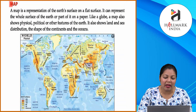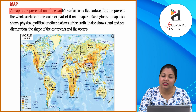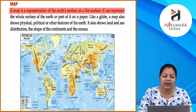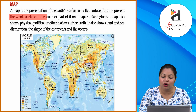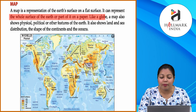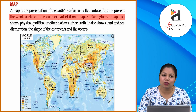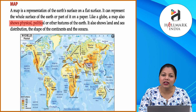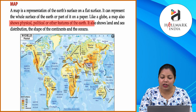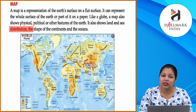A map is a representation of the earth's surface on a flat surface. It can represent the whole surface of the earth or part of it on a paper. Like a globe, a map also shows physical, political, and other features of the earth. It also shows land and sea distribution, the shape of the continents and the oceans.